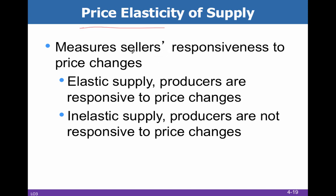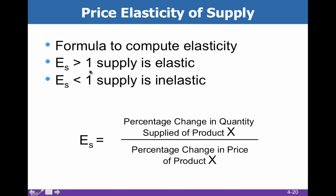We're talking about the responsiveness of sellers to changes in price. We have elastic supply and inelastic supply. With inelastic supply, producers are not going to be responsive to price changes, but with elastic supply, they will be. We're going to have elastic supply whenever the coefficient is greater than one, and inelastic supply whenever the coefficient is less than one.